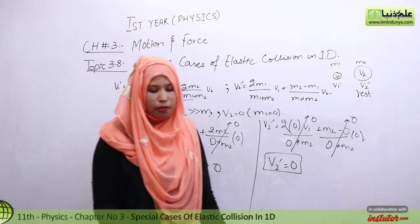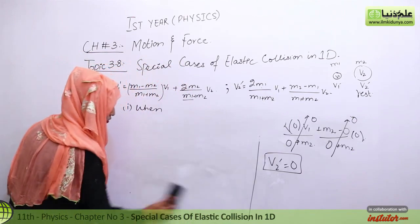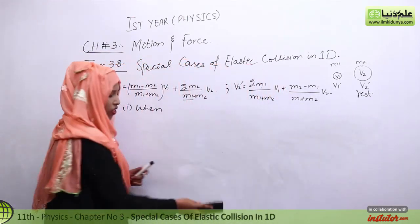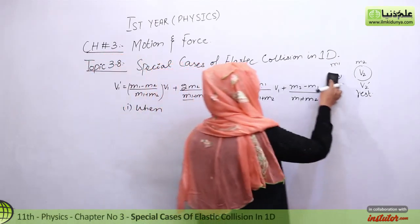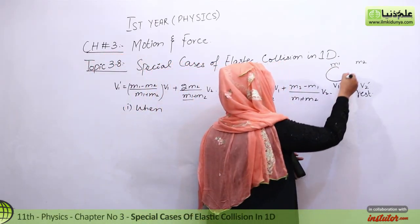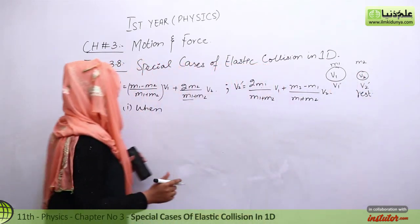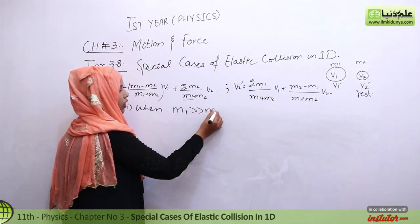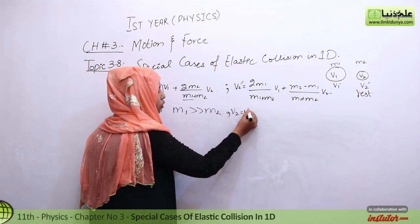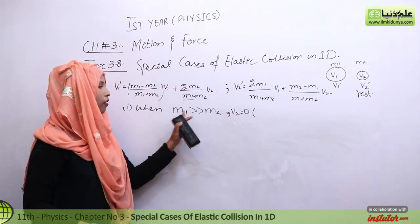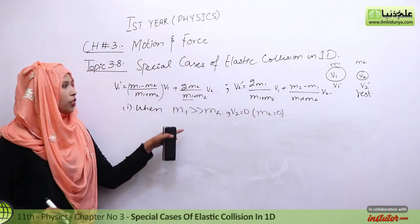The last case: when a massive body collides with a lighter stationary body. Here m1 is massive and m2 is very light, so m1 is very much greater than m2. The lighter body m2 is at rest, meaning v2 equals zero. Since m2 is negligibly small compared to m1, we approximate m2 as equal to zero.